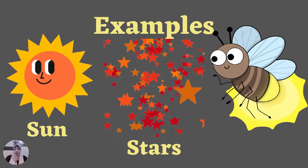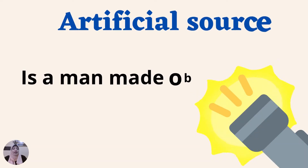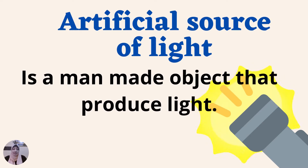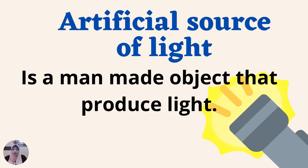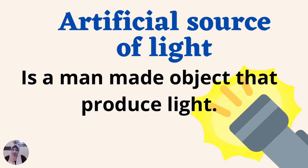Let us move to the second type: artificial source of light. An artificial source of light is a man-made object — a person made an object that produces light. We can see the torch here as an example.